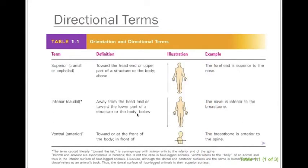Here are definitions and examples of these terms. They each have opposites. The first term is 'superior,' which can also be called 'cranial' or 'cephalad,' meaning toward the head or upper part of the structure or body. For example, the forehead is superior to the nose. The opposite is 'inferior,' meaning away from the head or toward the lower part — another term is 'caudal,' which means toward the tail. For example, the navel is inferior to the breastbone.